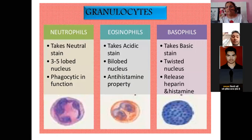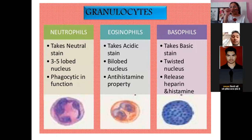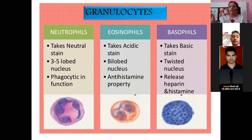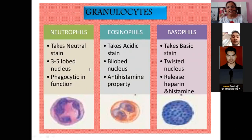When a doctor tells you to do a TLC and DLC test and eosinophilia is elevated, it means you have an allergy. Eosinophilia means eosinophil cells have increased in your blood. Eosinophils are anti-histamine cells with anti-allergic properties — they protect us from allergies. They take acidic stain and have a bi-lobed nucleus.